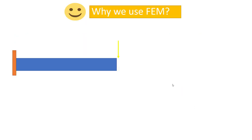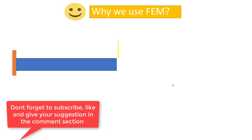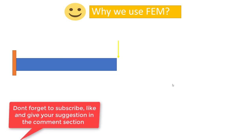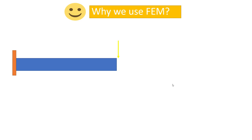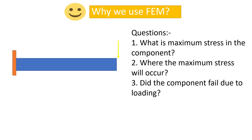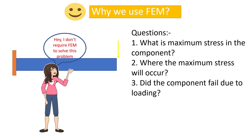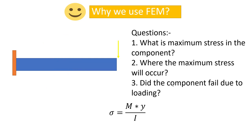Now, why do we use FEM and why is it so popular in today's industry? Usually, classical closed-form solutions are available only for very simple problems. For example, consider a cantilever subjected to a bending load applied at its end. For mechanical users, questions like the maximum stress, its location, and whether the component will fail are answerable easily using classical formulas without FEM.